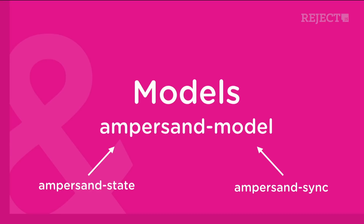Because ampersand is really modular, each piece is made of something else. Only ampersand state and ampersand router are standalone modules. Models are just a mix of ampersand state and ampersand sync, which gives the model the ability to store data on the server — to fetch, save, and destroy models.